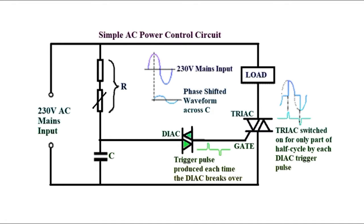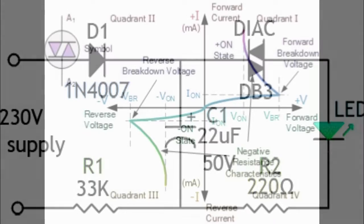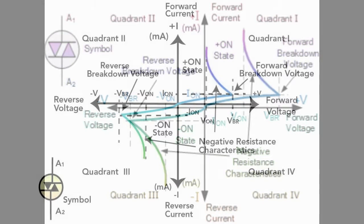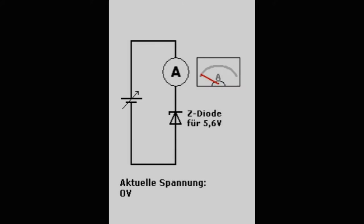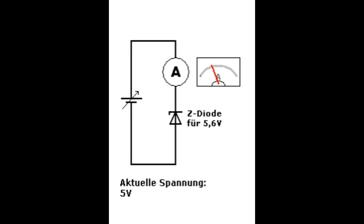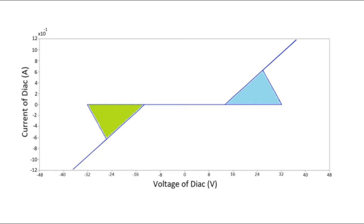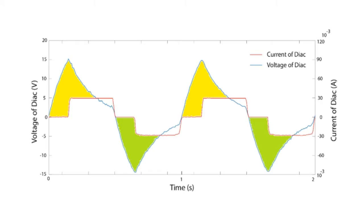DIACs are mostly used as trigger components in phase excitation and variable power control applications because the DIAC provides a sharper trigger pulse as opposed to a ramp voltage used to turn on the main switching component. As shown in the characteristic curve, the DIAC blocks current in both directions. This blocking continues until a voltage greater than VBR is applied and breakdown occurs. At that point, the DIAC passes a large amount of current at high voltage, similar to a Zener diode. The VBR point is called the DIAC breakdown voltage.